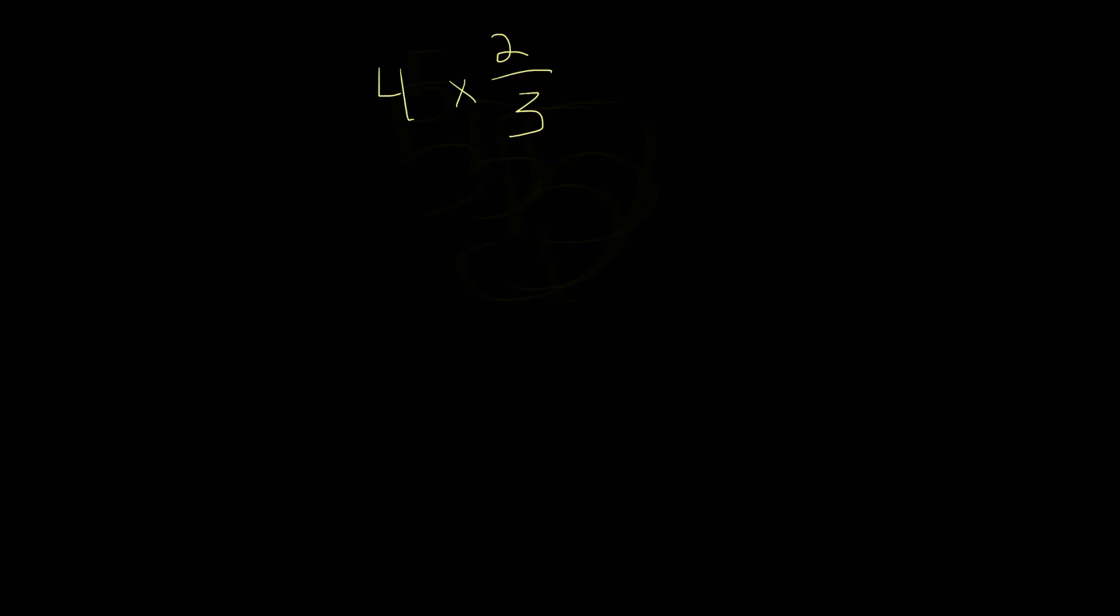And here's a trick for multiplying a whole number with a fraction. You actually don't need to make the whole number into a fraction. You could just simply multiply the whole number with the numerator. Because 4 over 1 times 2 thirds, you're doing the same thing. You're multiplying this with this. So you don't have to rewrite this.